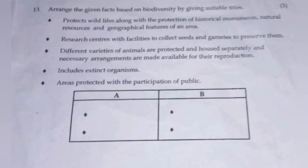Arrange the given facts based on biodiversity by giving suitable titles. Answer: 1. Protects wildlife along with the protection of historical monuments, natural resources and geographical features of an area — In-situ conservation. 2. Reserve centers with facilities to collect seeds and gametes to preserve them — Ex-situ conservation. 3. Different varieties of animals are protected and housed separately and necessary arrangements are made available for their reproduction — Ex-situ conservation. 4. Includes extinct organisms — Ex-situ conservation. 5. Areas protected with the participation of the public — In-situ conservation.